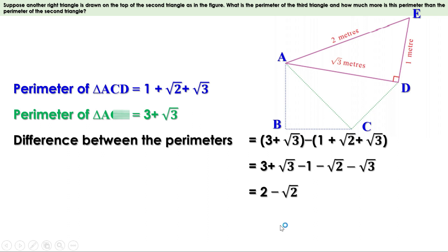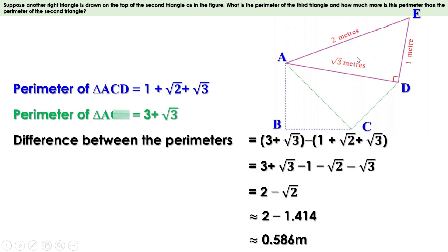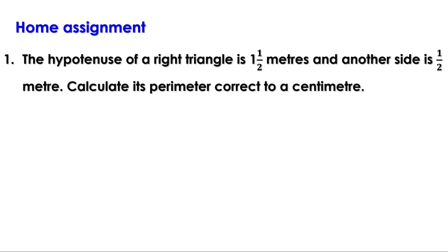The difference between the perimeters is 2 − √2. For the approximate value, √2 ≈ 1.414, so 2 − 1.414 ≈ 0.586 meters. The perimeter of the third triangle is approximately 0.586 meters more than the perimeter of the second triangle. Today we discussed the section on addition and subtraction, seeing how to add and subtract expressions involving √2, √3, etc. Homework: the hypotenuse of a right triangle is 1.5 meters and another side is also 1.5 meters — calculate its perimeter correct to a centimeter. In the next video we will discuss problems on page 52. Bye.